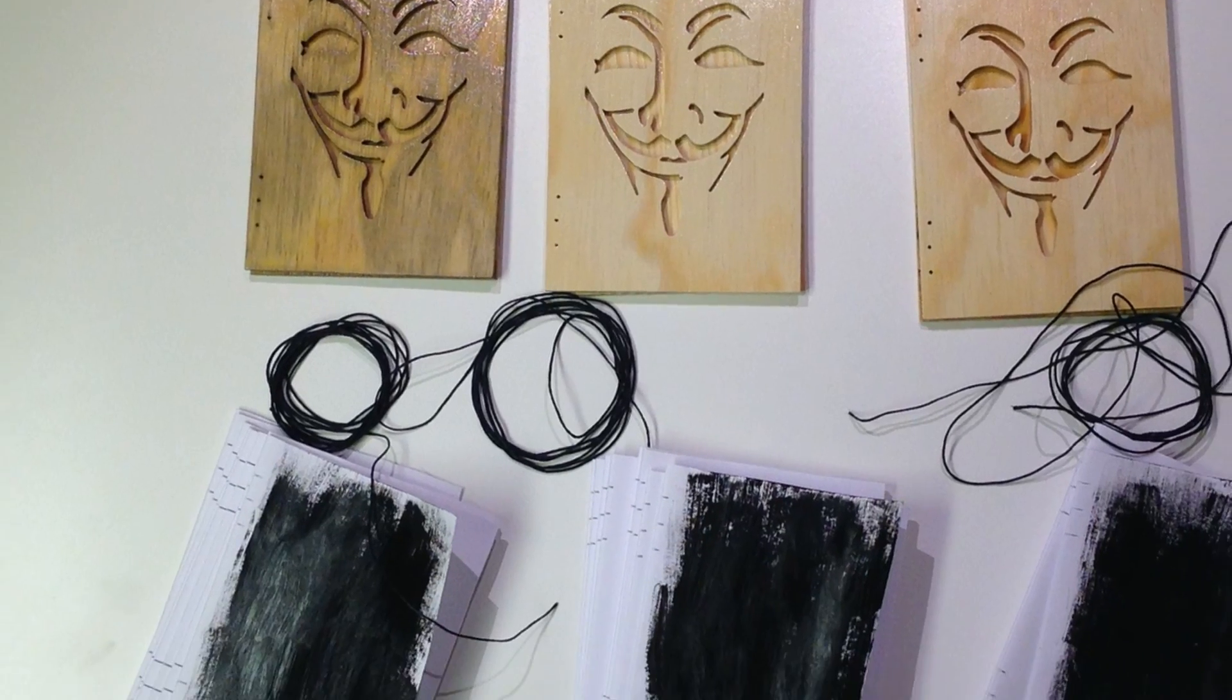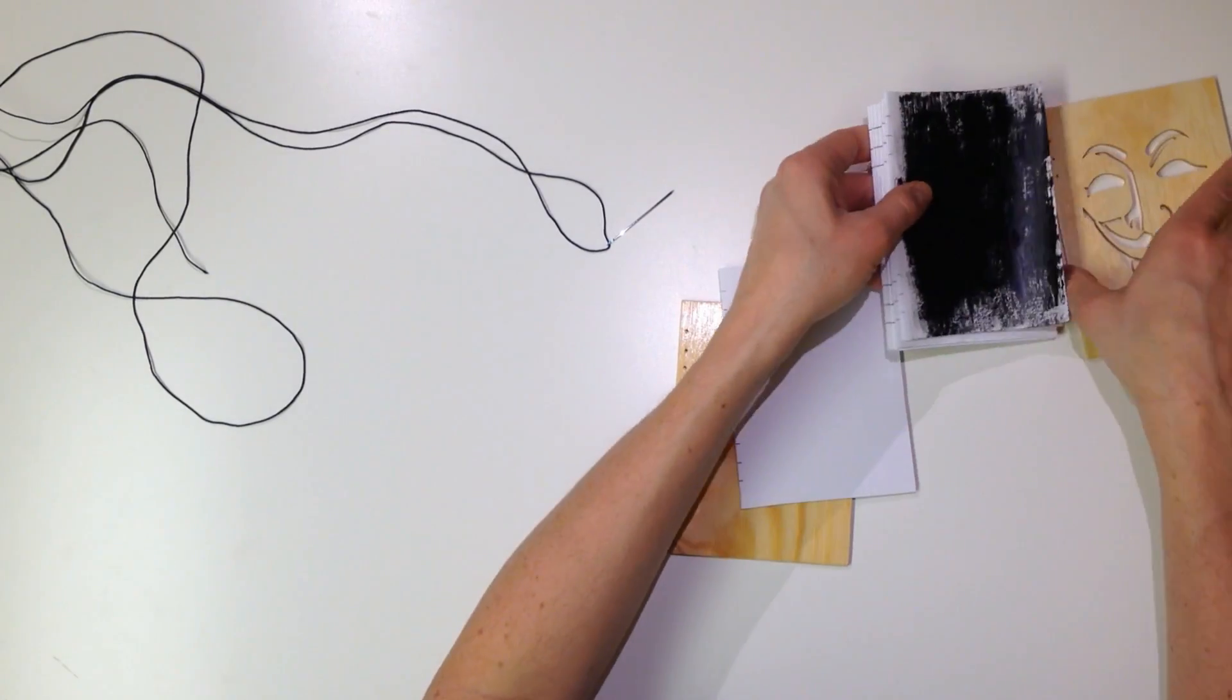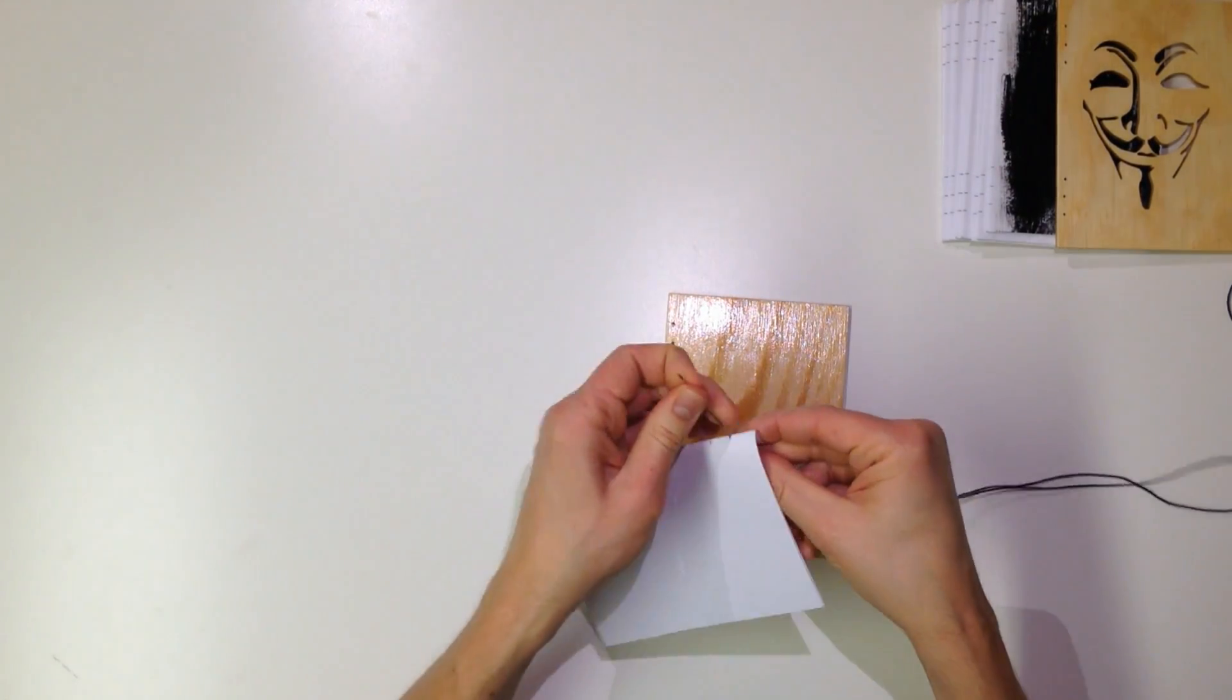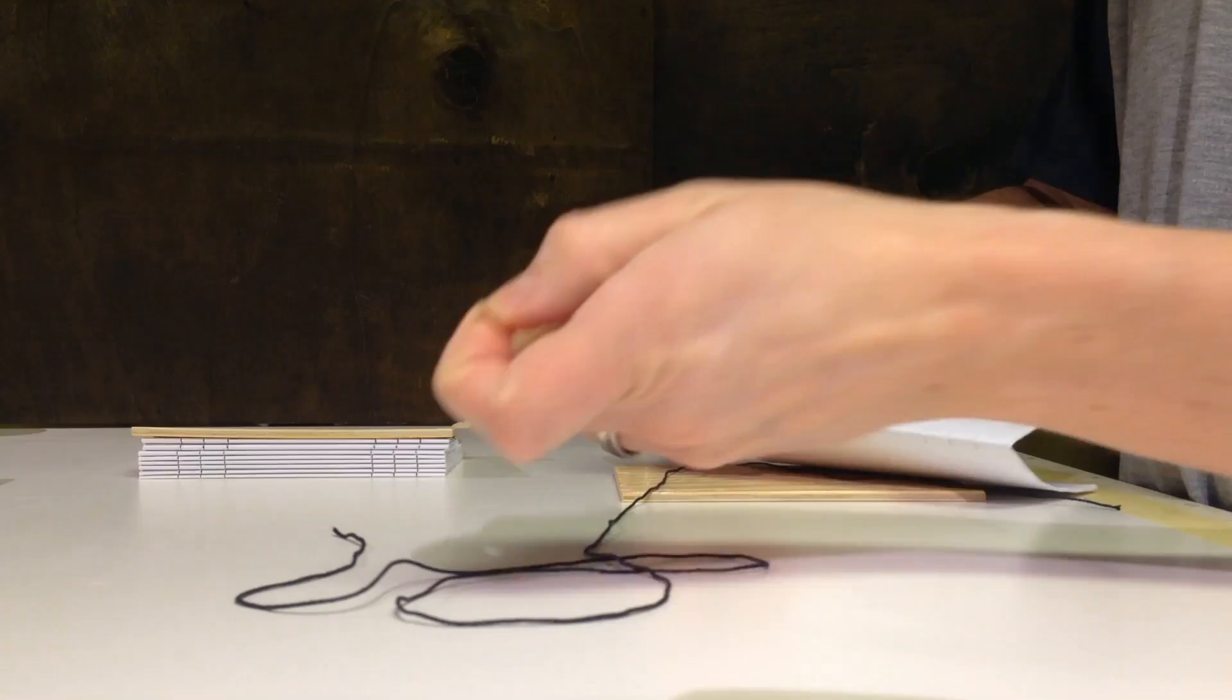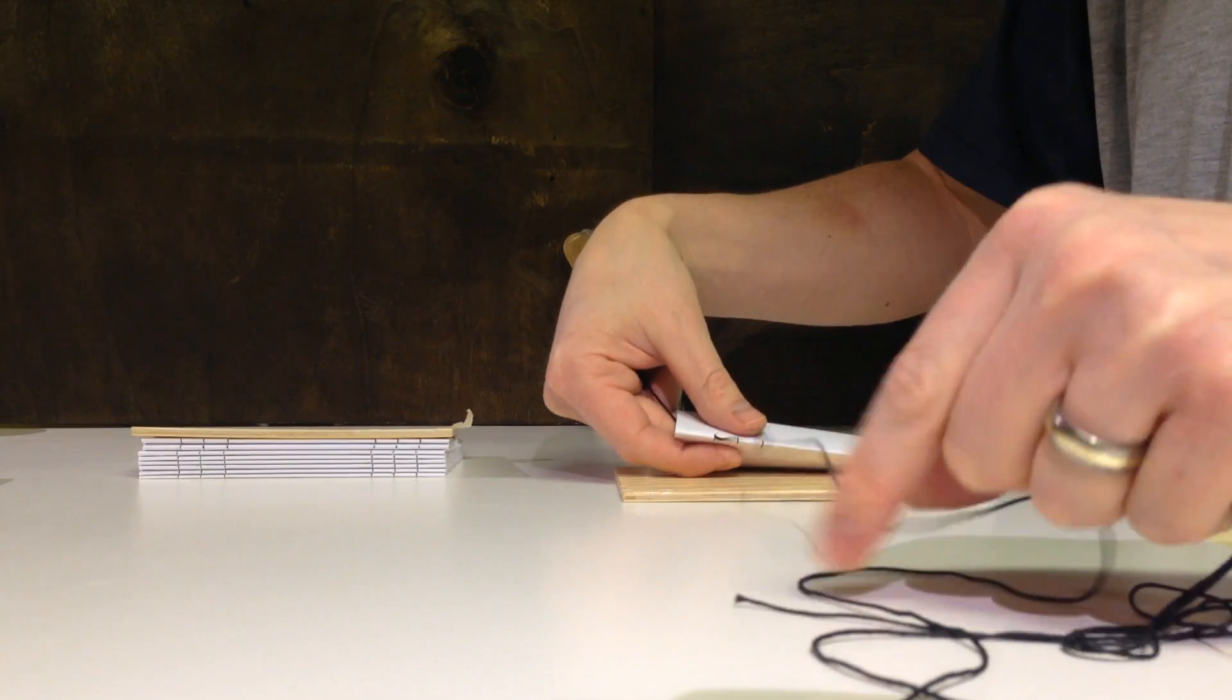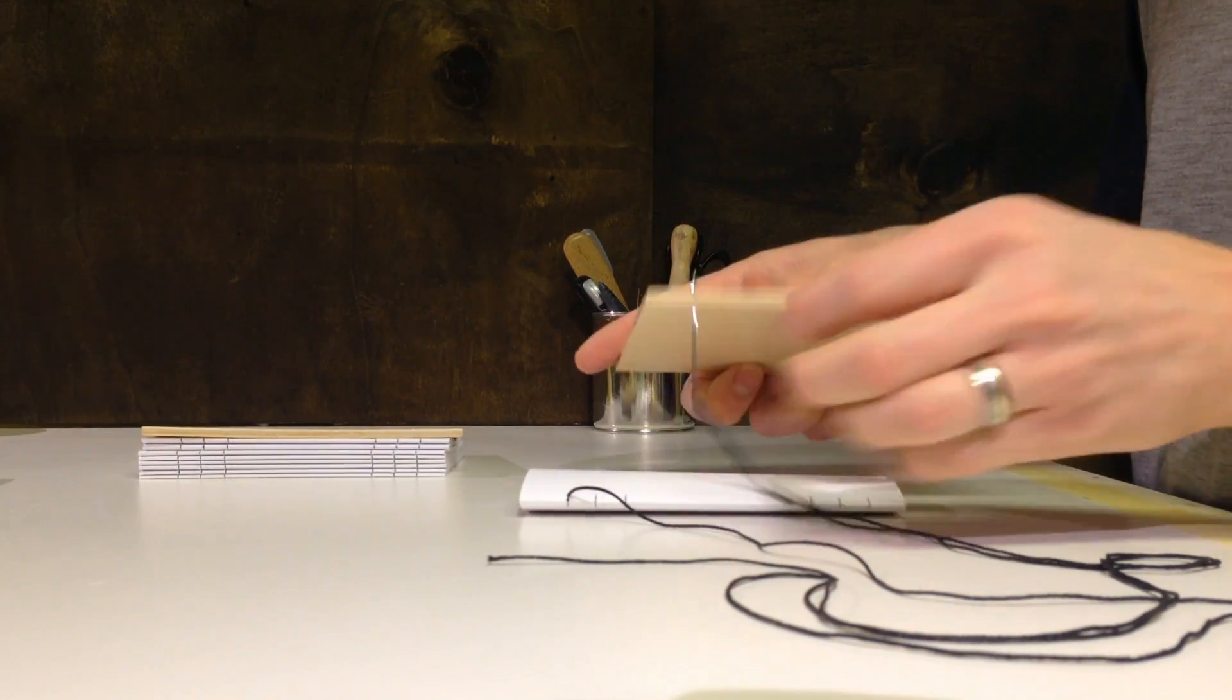With all the elements ready, it's time to start the Coptic stitching. I usually start stitching from the back and start combining the last signature to the cover. The slits cut into the signatures line up nicely with the holes drilled into the covers.